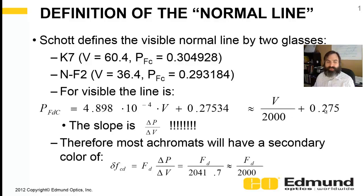Now, the slope, 1 over 2,000, that slope is delta P over delta V, and that is exactly what your secondary color is, that slope, delta P over delta V. Therefore, most achromats, if they're going to fall on that glass line, which most of them fall very close, a good rule of thumb that secondary color, or the defocus from C to D light, is the focal length at D times the slope, or it's roughly the focal length divided by 2,000. A great rule of thumb to remember for a visible achromat. The secondary color is the focal length divided by 2,000.